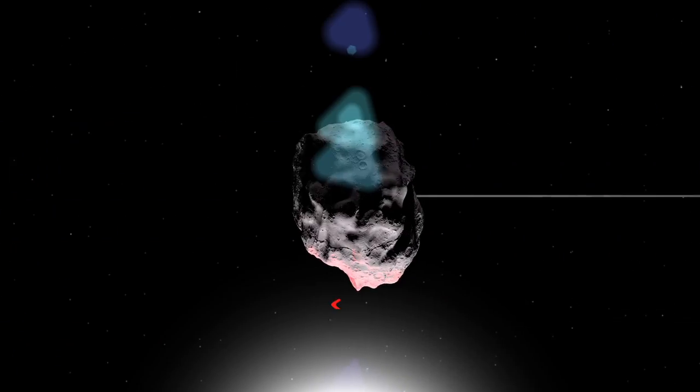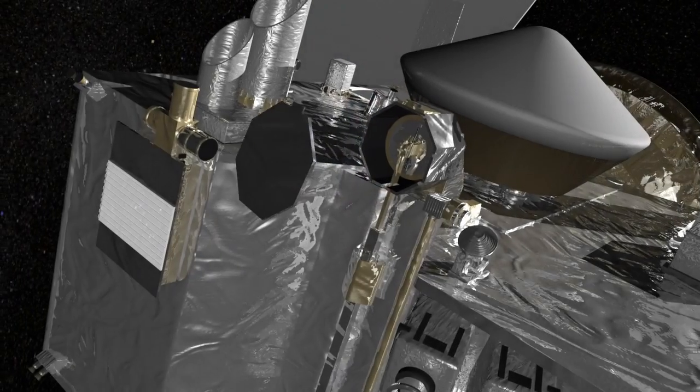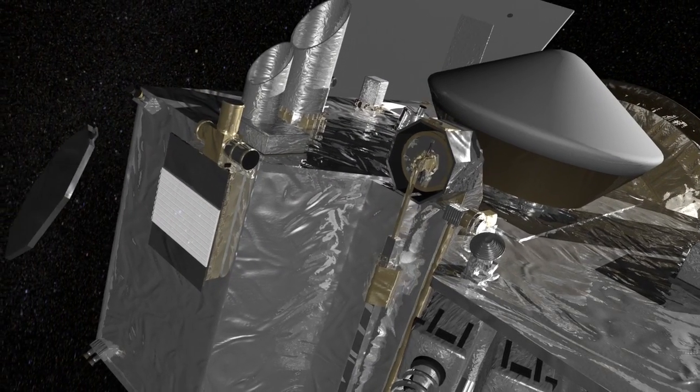This includes deviations caused by heating and cooling from sunlight, and it will allow them to pick a site for OSIRIS-REx's primary mission.